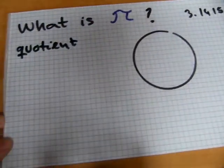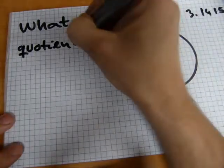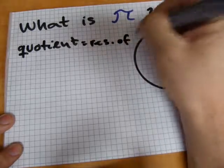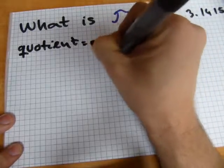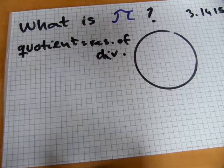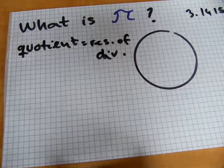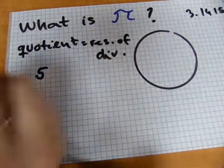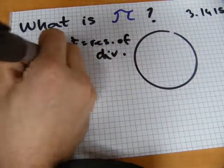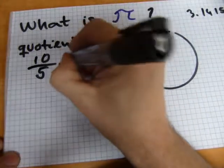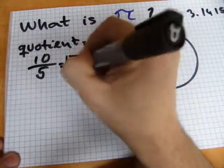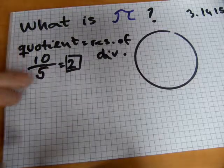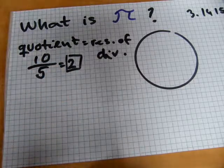By definition, quotient is the result of division. So some division takes place and then you have a result. For example, here is 5. Oh, that's a bad number right away. How about 10? 10 divided by 5 equals 2. 2 is the quotient. 10 is the dividend, 5 is the divisor, 2 is the quotient.